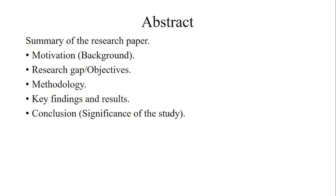Now we will see the abstract. What is abstract? Abstract is a summary of your research paper — the whole paper summarized in around 300 words, which is what journals typically accept. The first thing the abstract should cover is motivation: what motivates you to make this research, what is the importance and the motive behind your research.